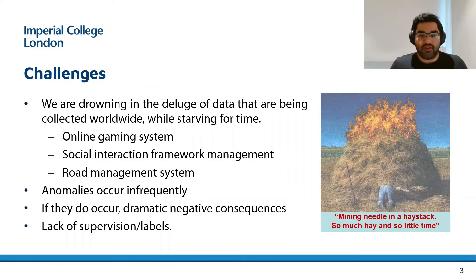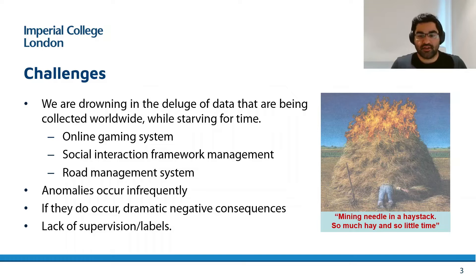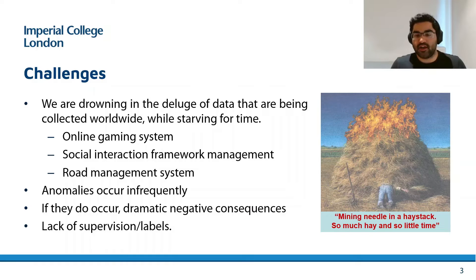Anomalies usually have dramatically adverse effects, so we want to make sure that our true positive set is as large as possible — in other words, we need very high recall. And finally, in most cases getting expert labels is hard, so we need to formulate anomaly detection as an unsupervised problem and not a supervised binary classification setting.